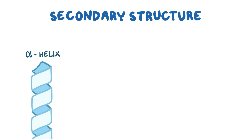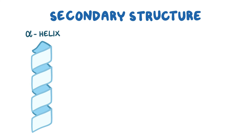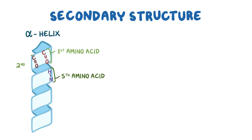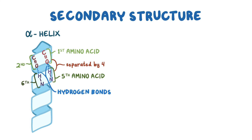The alpha helix resembles a spring. The helix brings the CO of the first amino acid near the NH of the fifth amino acid; the second CO gets near the sixth NH, and so on. In other words, each of these instances is separated by four amino acids. Having the O and H get close to one another allows for a strong hydrogen bond to form, and that makes the alpha helix structure really stable.